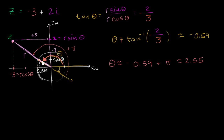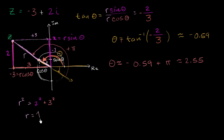Now we just have to figure out the length — what r is. We can use the Pythagorean theorem for that. We set up a right triangle: this distance is 2 and this distance is 3 (the coordinate is negative 3 but the distance is just 3). So r squared equals 2 squared plus 3 squared, which means r equals the square root of 4 plus 9, which is the square root of 13. So r is equal to the square root of 13 and theta is approximately 2.55 radians.